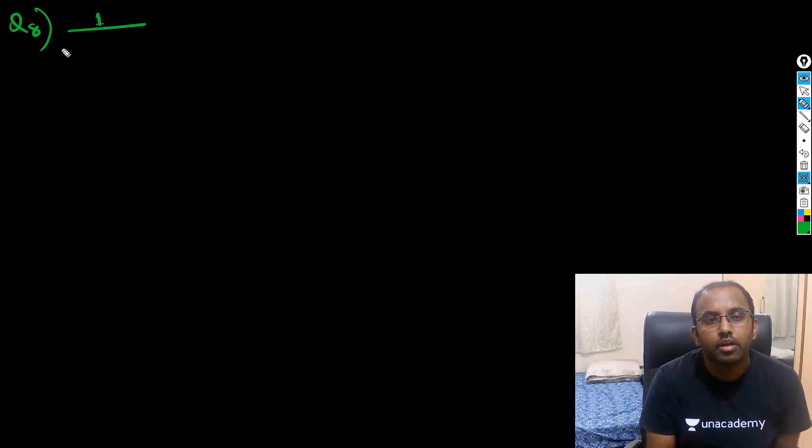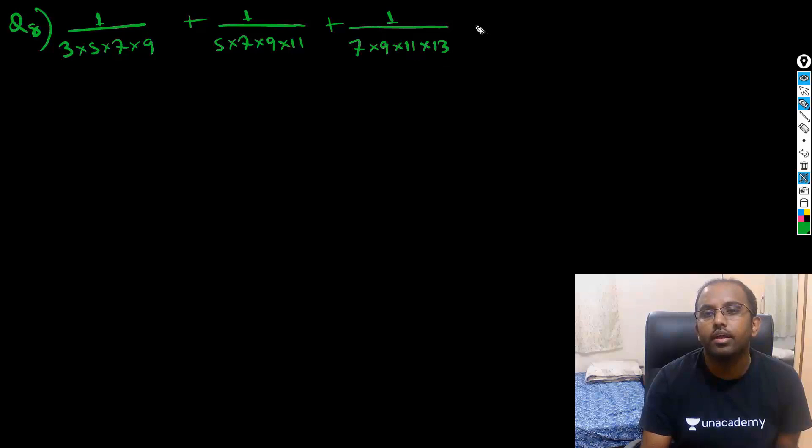So this question says that we have to form 1/(3×5×7×9) plus 1/(5×7×9×11) plus 1/(7×9×11×13) and this will go on till 15 terms.